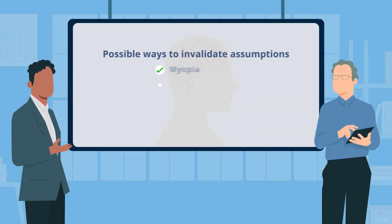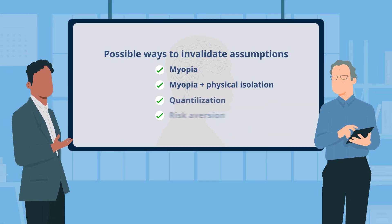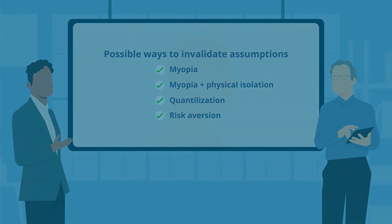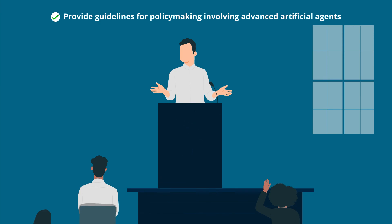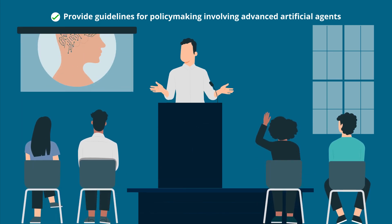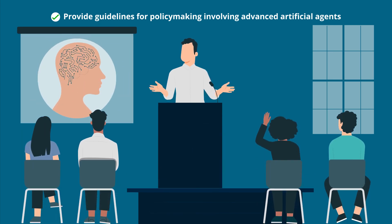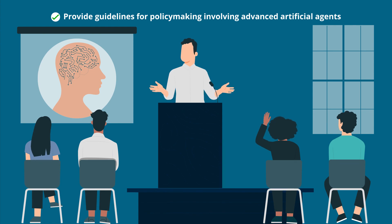The researchers then discussed possible ways to invalidate these assumptions and avoid such consequences. Overall, the findings of the study could provide important guidelines for policymaking involving advanced artificial agents.